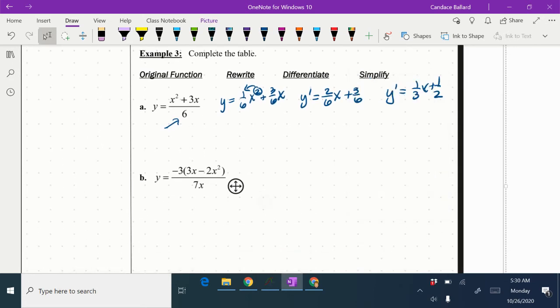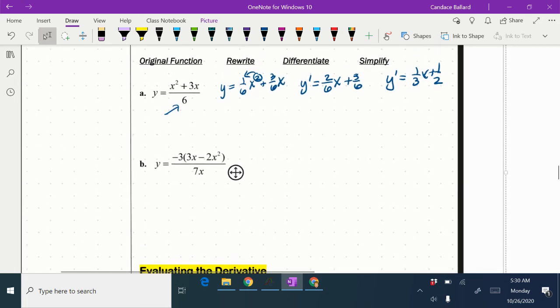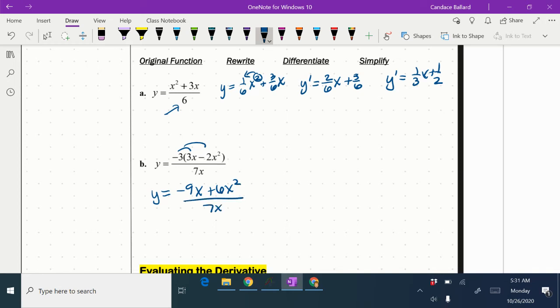Then looking at B, the first thing I would probably do to rewrite this is I would probably distribute that negative 3. So it's going to take me a couple of rewrite steps. I'm just going to rewrite underneath. So negative 9x plus 6x squared over 7x.